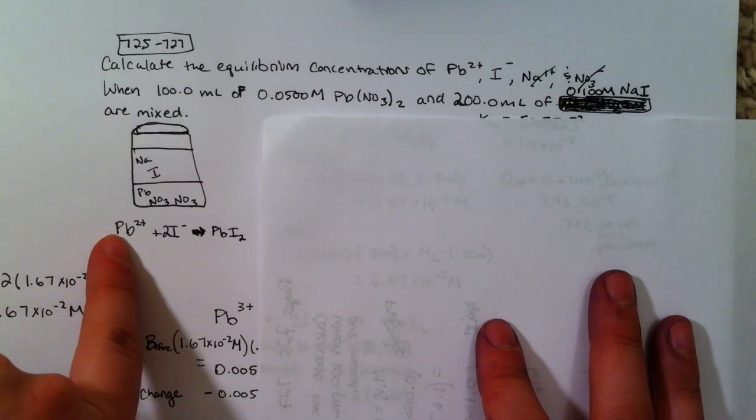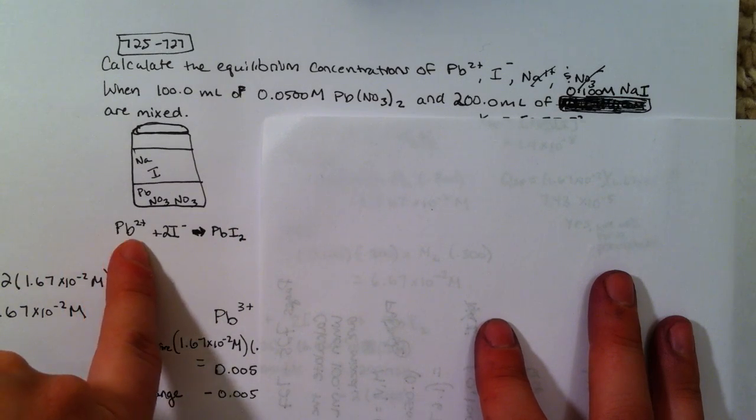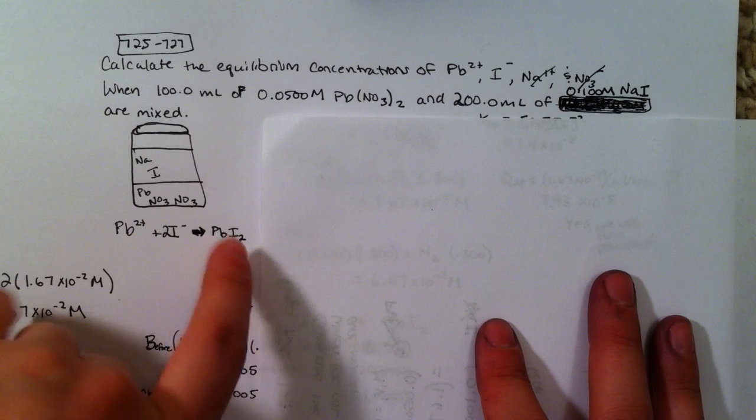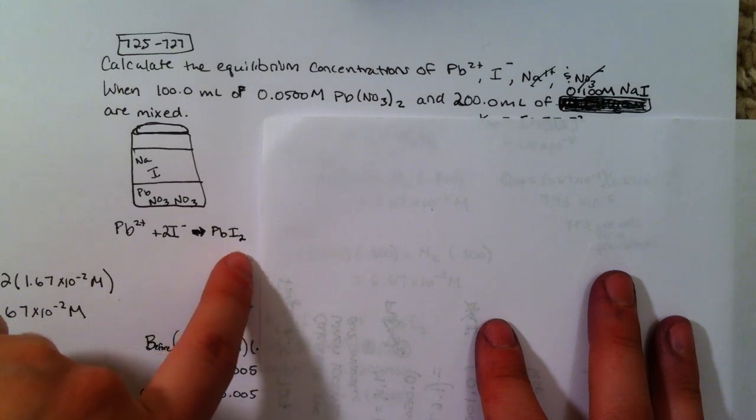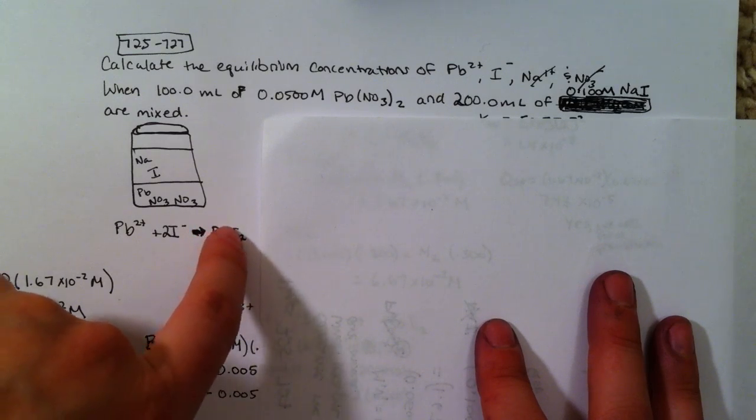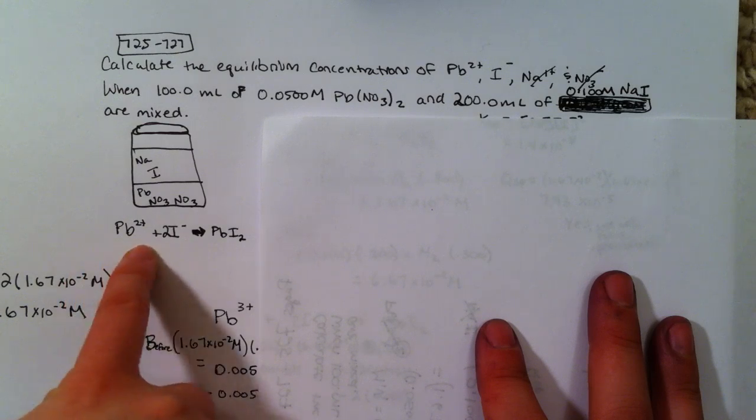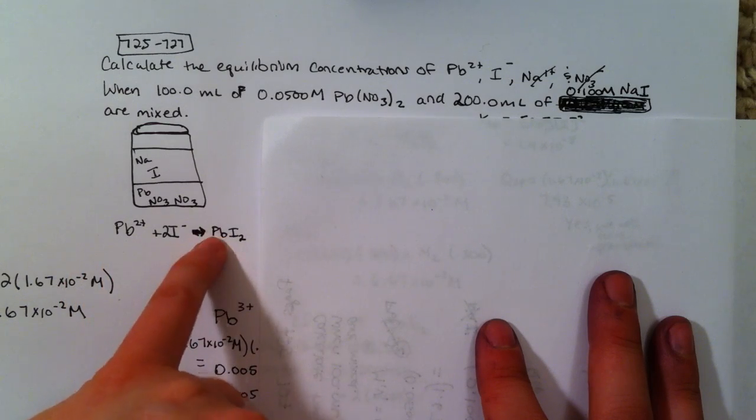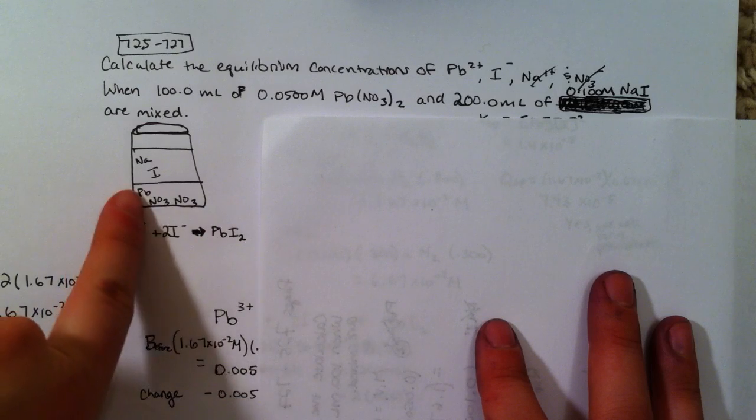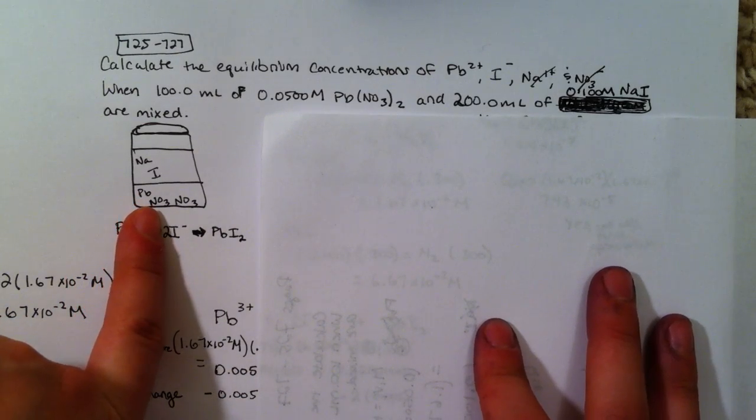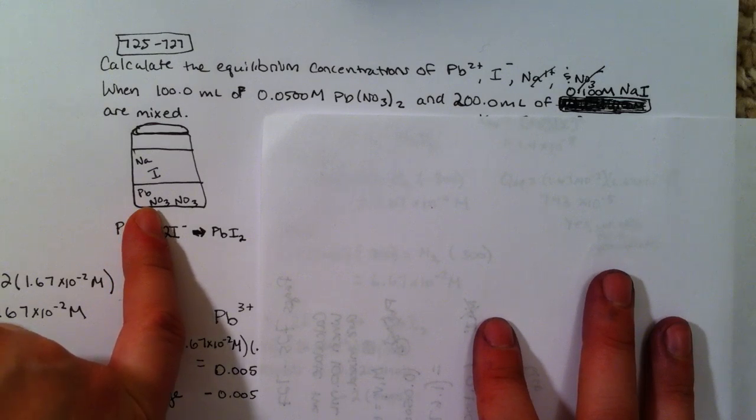The other thing I know is that I'm going to have lead and iodine reacting to form lead iodide initially, and then some of that lead iodide is going to dissolve back in the water. So this is going to be the insoluble substance. I knew it wasn't the sodium or the nitrate because I know my solubility rules and both of those are soluble.